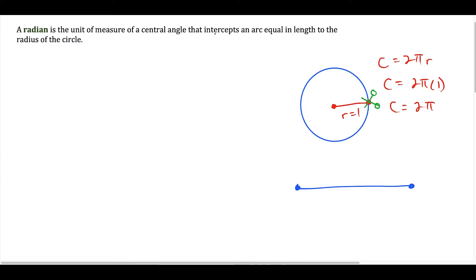That line represents the intercepted arc, and the entire length of this line is going to be 2π, which is the entire circumference. The bottom here represents the radian measure — the length of the circumference — and up top I'm going to write degrees. So if I don't spin at all, that corresponds to 0 degrees, but if I spin the entire circumference, that corresponds to 360 degrees. So 360 degrees is equal to 2π radians.